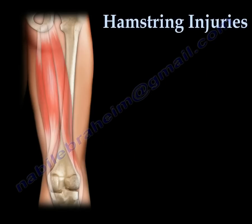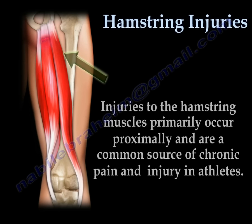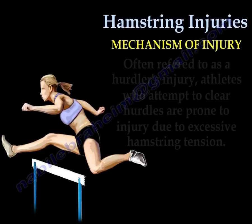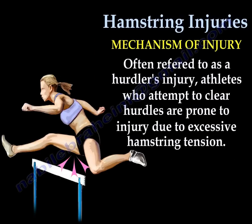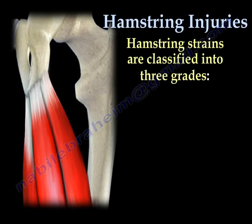Injuries to the hamstring muscles occur proximally and are a common source of chronic pain and injury in the athlete. The mechanism of injury is often referred to as a hurdles injury — athletes who attempt to clear hurdles are prone to injury due to excessive hamstring tension. Hamstring strains, or pulled hamstrings, are classified into three grades.